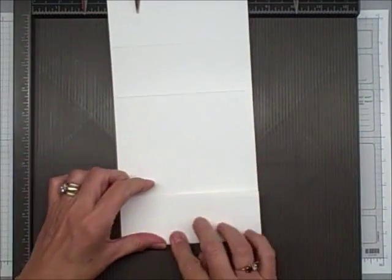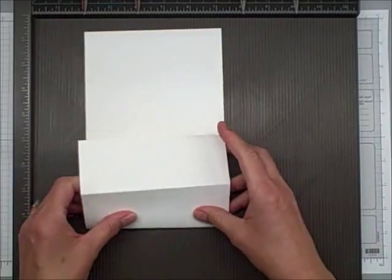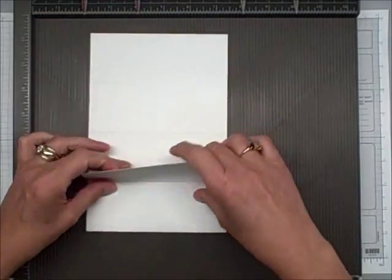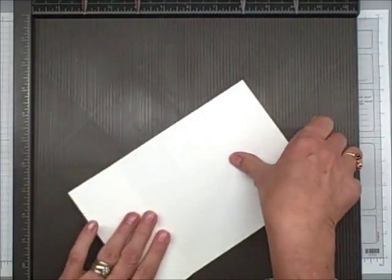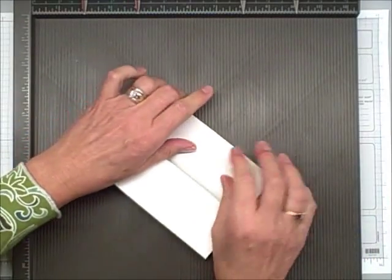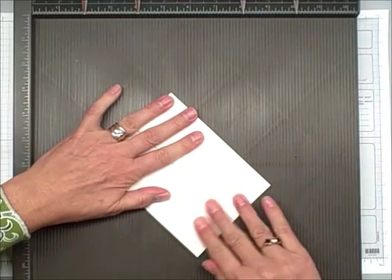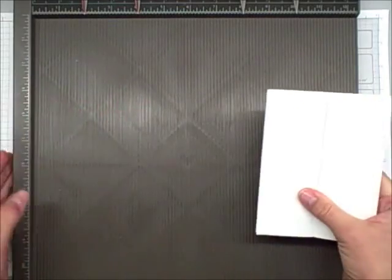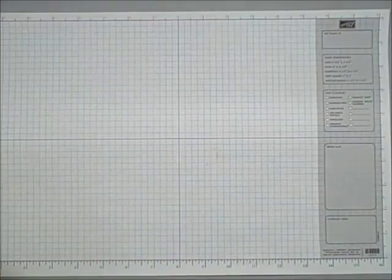We're going to also use the Simply Scored very shortly to—I did it backwards. There we go. That's the way it's supposed to fold. To do the belly band. But I'm going to go ahead and put together this card for you first. So let me set that to the side.